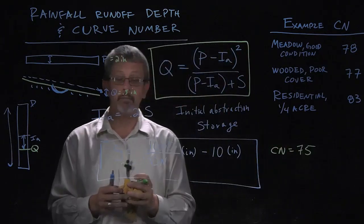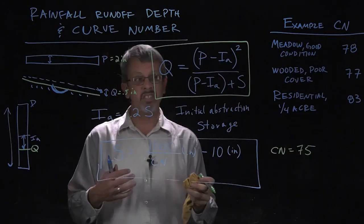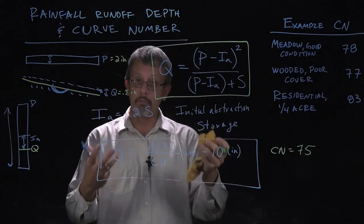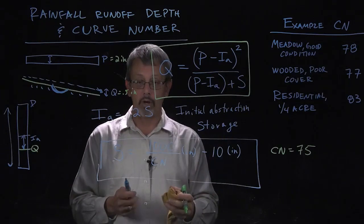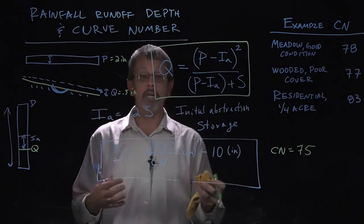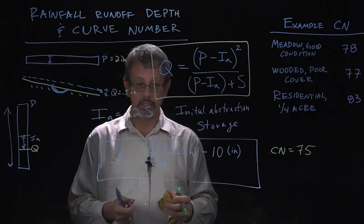We look it up in the chart, we find out that we have a curve number of 75, which means something like a wooded situation where a good portion of the rainfall is going to be able to infiltrate or end up captured by the vegetation that's there.